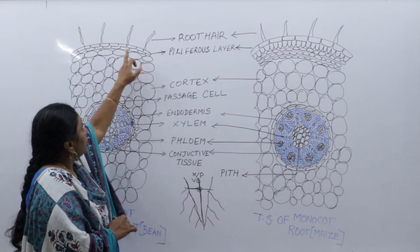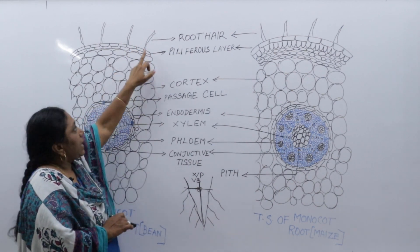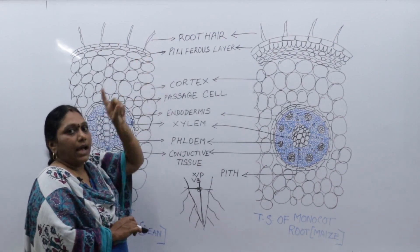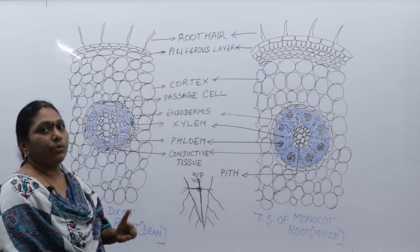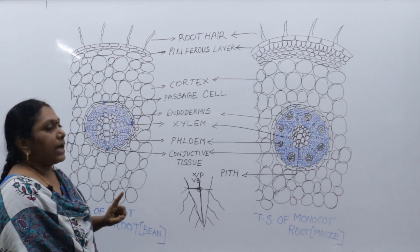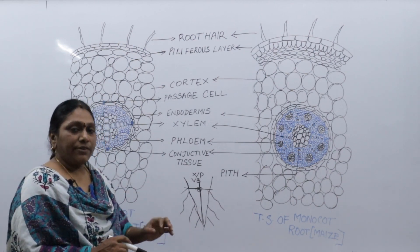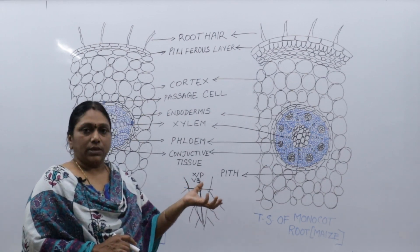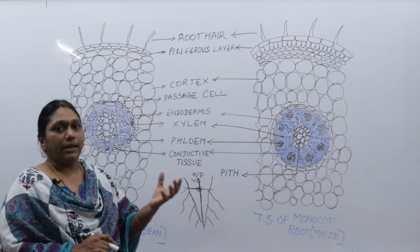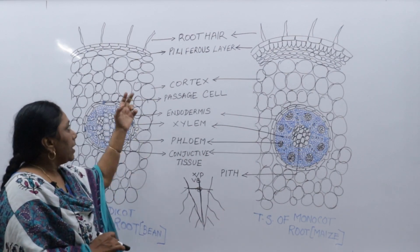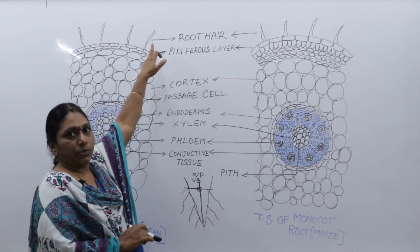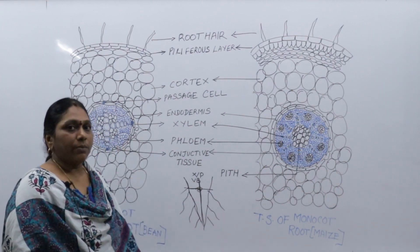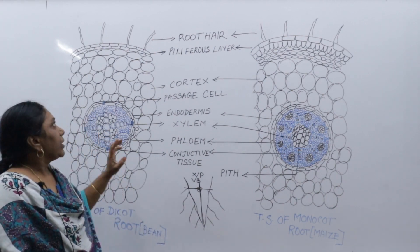Root hairs are projections of the epidermis coming from the outer layer. One important point you have to remember is that root hairs are unicellular structures — they are made up of only one cell. That point you have to remember without fail.